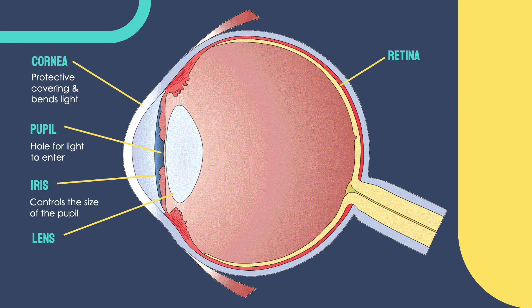The color of the iris varies — it can be blue, green, brown, or a mixture. When we talk about eye color, we are referring to the iris.